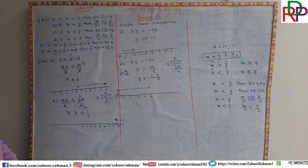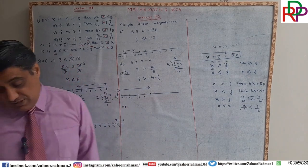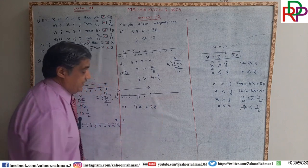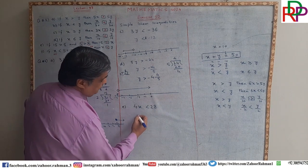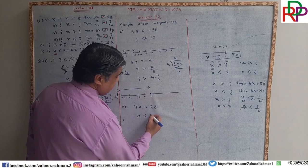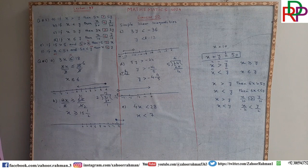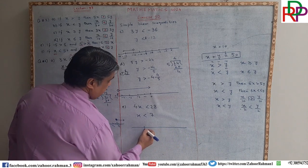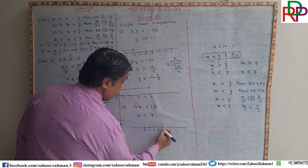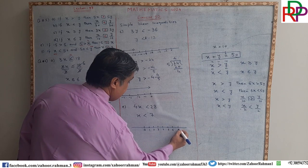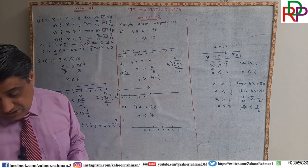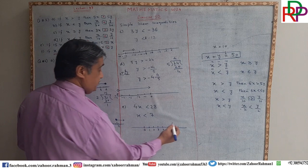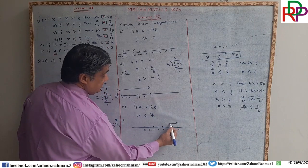For part E: 4x is less than 28. Dividing both sides by 4 gives x is less than 7. On the number line, we mark 1, 2, 3, 4, 5, 6, 7. Because there is no equal symbol, we place an empty circle at 7, and since it is less than, we draw the arrow to the left.